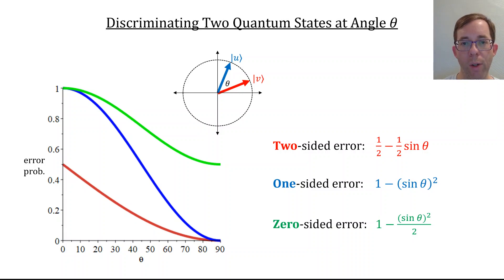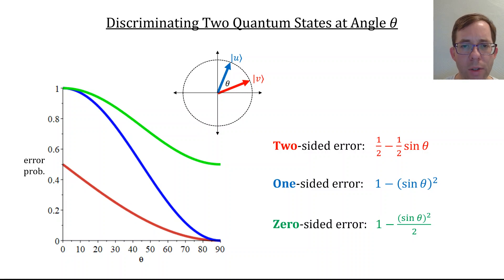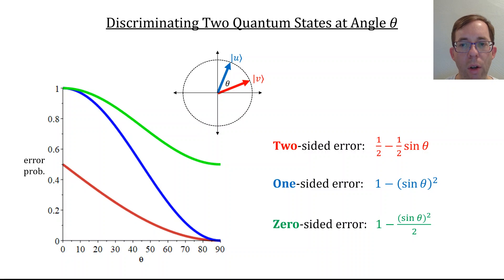This is a follow-up to the last video on discriminating two quantum states, and a precursor to lecture 6. In that last video, we talked about this problem: if you have two known qubit states, call them u and v, at an angle of theta, and you're promised an unknown state psi which is either u or v, what is the best probability with which you can distinguish between psi equals u and psi equals v? The best you can do depends on the angle between the two qubit states—assuming real amplitudes—and also on whether you're going for two-sided error, one-sided error, or zero-sided error. I described three algorithms last time which did better or worse depending on the kind of error and the angle theta.